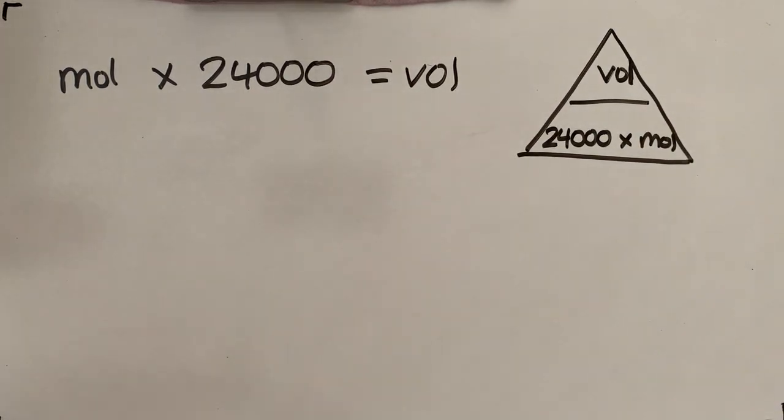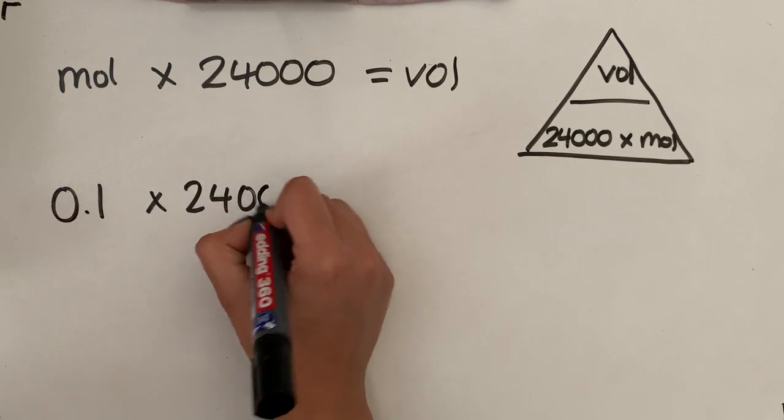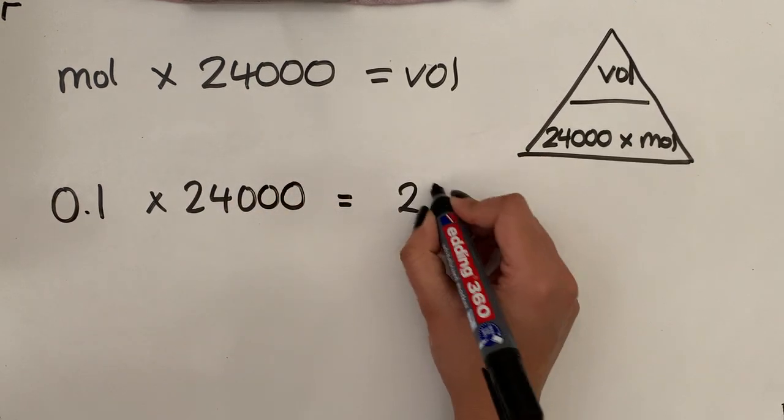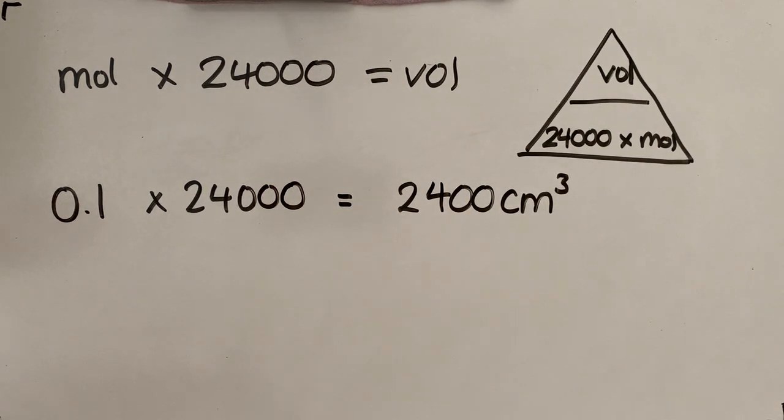So question number two is 0.1 moles of ammonia. As you can see, the identity of the gas doesn't actually matter here. So we've got 0.1 moles of ammonia. So we do 0.1 times 24,000 and that gives us 2,400 centimeters cubed like so. So question number two is just 2,400 centimeters cubed. Apply that to all of the questions in exercise eight.